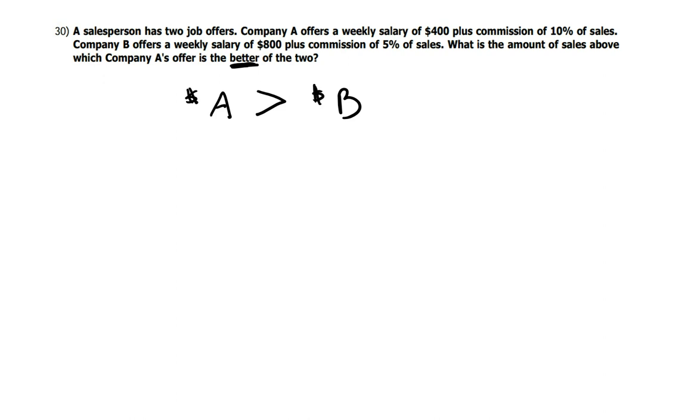Company A offers a weekly salary of $400 plus commission of 10% of sales. So I'm going to have to let X equal my sales. So for Company A, it's going to be $400 plus 10% of the sales. 10% would be .10, and they're going to multiply that times the sales that you make.